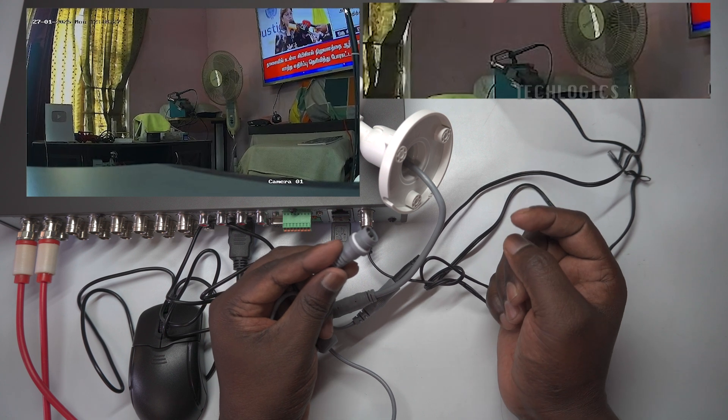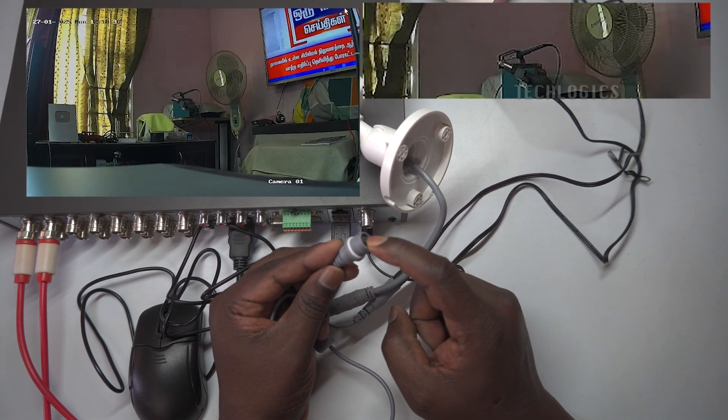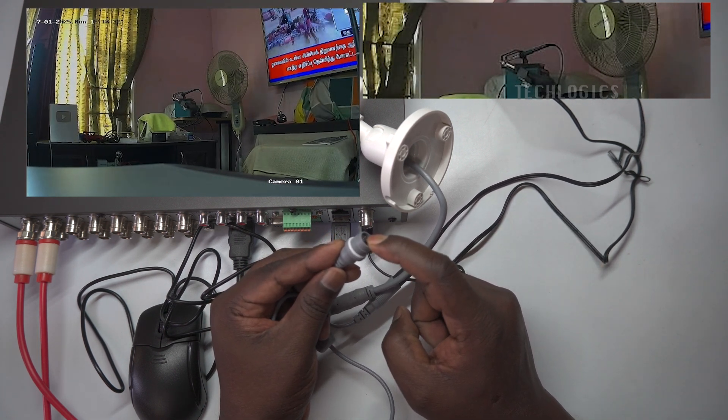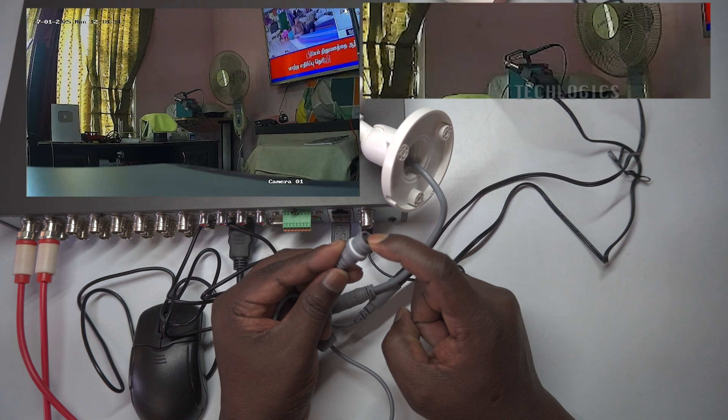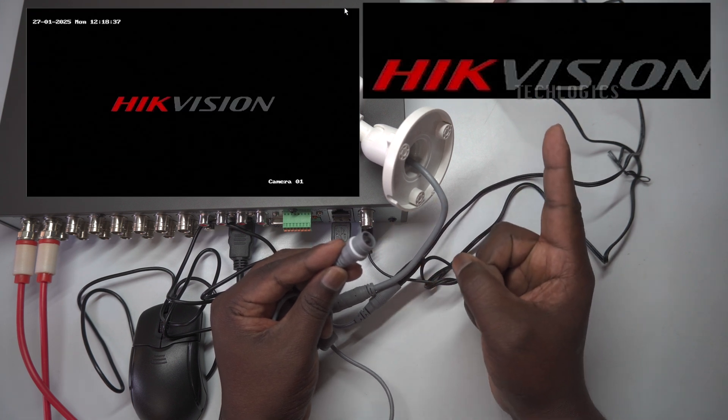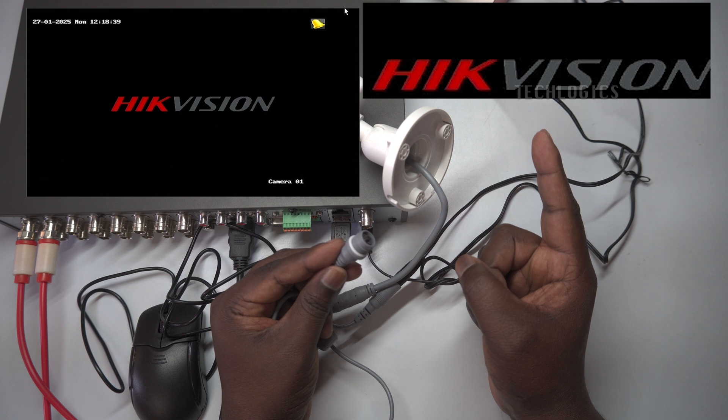The signal switch button is located along with the camera's video connectors. This button enables you to switch between different video formats, ensuring that the camera's output matches your DVR technology, regardless of the brand.